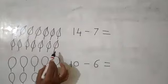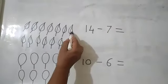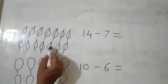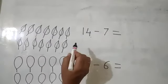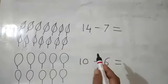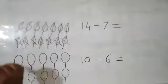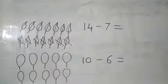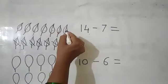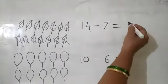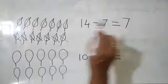Here are some leaves. Let's count them: 1, 2, 3, 4, 5, 6, 7, 8, 9, 10, 11, 12, 13, 14. These are 14 leaves and we have to subtract 7, meaning we cross out 7 leaves: 1, 2, 3, 4, 5, 6 and 7. Now see how many leaves are remaining: 1, 2, 3, 4, 5, 6 and 7. So 14 minus 7 is equal to 7. We crossed out 7 leaves and got the answer 7.